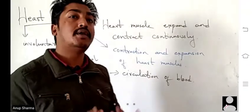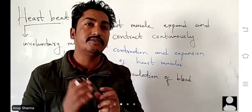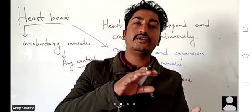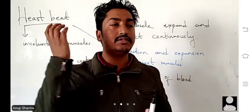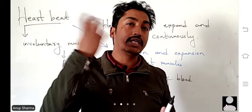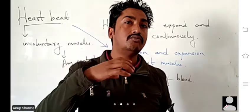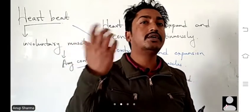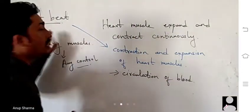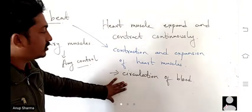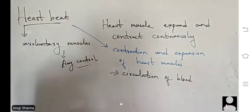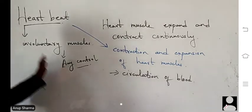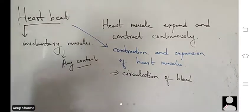For example, if you fill water in a plastic bottle and shake it slowly, you will hear a sound — thump, thump, thump. That is a thumping sound. A similar thing happens in the heart. The circulation of the blood produces a certain sound which can be heard at regular intervals, and these are called heartbeats.